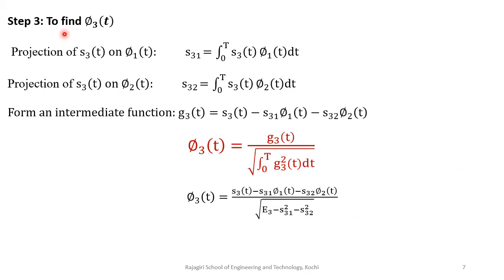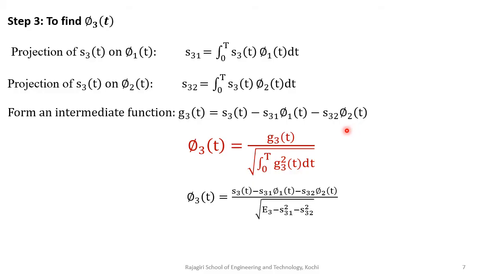In Step 3 we find φ3(t). We find the projection of s3(t) on φ1(t): s31 = ∫₀ᵀ s3(t) · φ1(t) dt, and the projection of s3(t) on φ2(t): s32 = ∫₀ᵀ s3(t) · φ2(t) dt. The intermediate function is formed as g3(t) = s3(t) − s31 · φ1(t) − s32 · φ2(t). Then the third basis function φ3(t) = g3(t) / √E[g3].